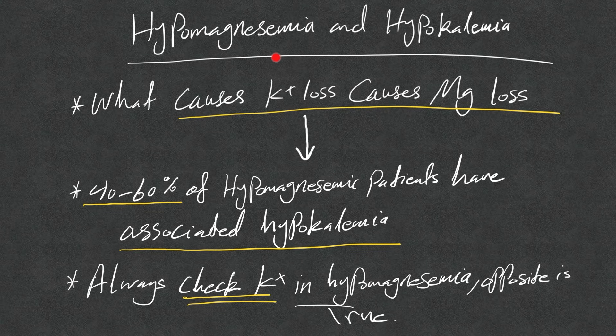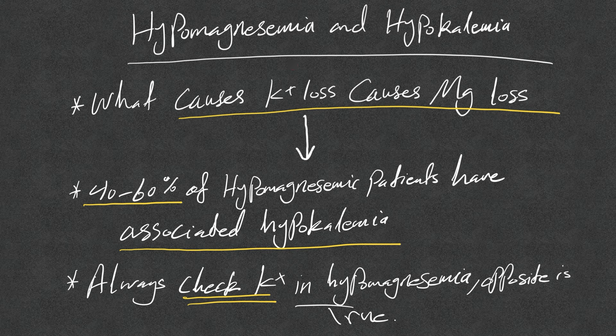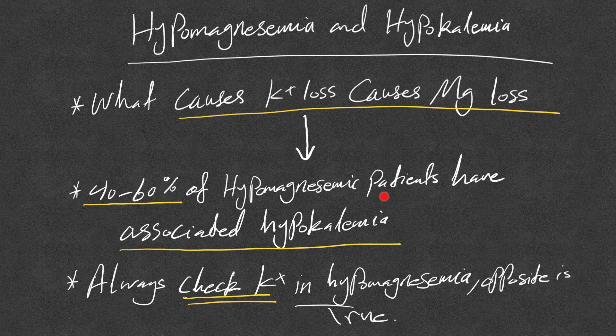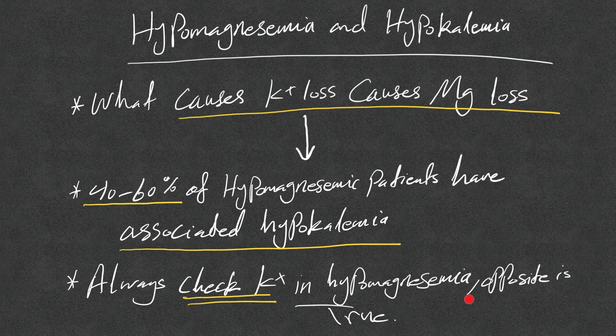It's very important to know the relation and association between hypokalemia and hypomagnesemia. What causes hypokalemia or potassium loss also causes magnesium loss. That's why 40 to 60 percent of hypomagnesemic patients have associated hypokalemia. Please always check potassium level in hypomagnesemia and the opposite is true. In hypokalemia, always check magnesium level.